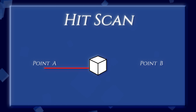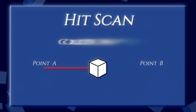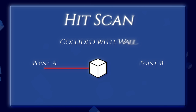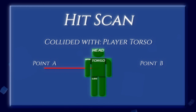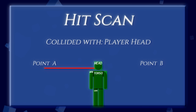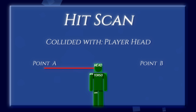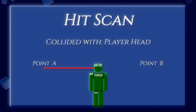If there is, we take the time to check which one it is. Is it a wall? Is it a player? If it is a player, then what body part did we hit? And using all that information that the hitscan has gathered, we can then create some visuals — we launch that bullet, calculate the damage, and maybe create a decal on a wall.